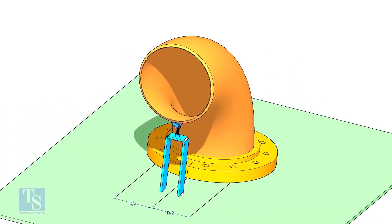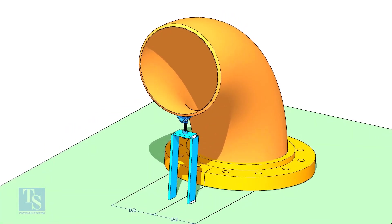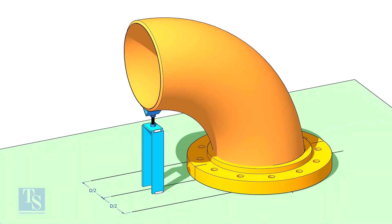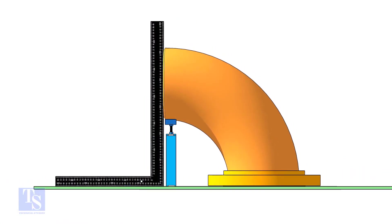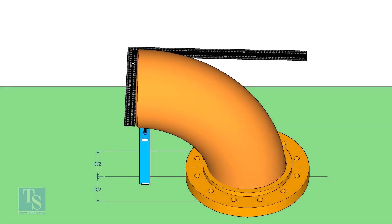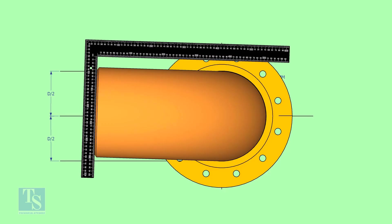If required, tack weld the screw jack below the elbow face as shown. Adjust the height of the bolt and level the face of the elbow. Hold a right angle as shown and check if the elbow is aligned.